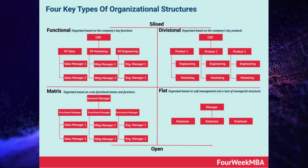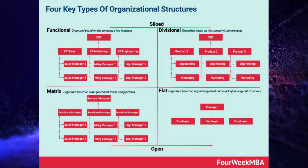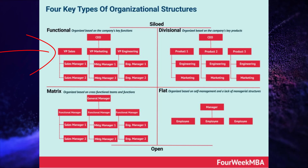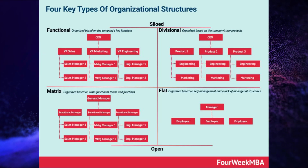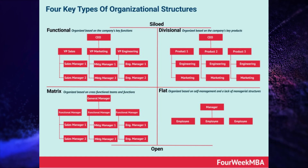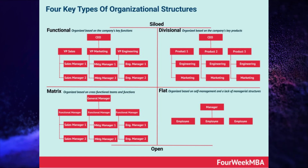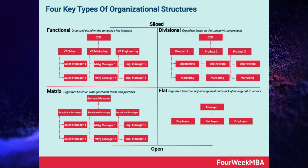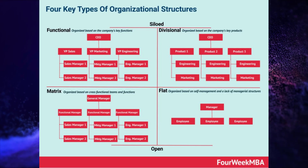I'm going to quickly explain some of the various types you'll see in industry, starting with the functional organizational structure. This organizes employees based on specialized functions or departments such as engineering, finance, marketing, operations, and HR. There's a clear hierarchical structure with function heads and managers overseeing specific areas. It promotes expertise and knowledge within each function and enhances efficiency within functional units, but can result in silos and limited cross-functional collaboration — lots of top-down communication but not much left-to-right.